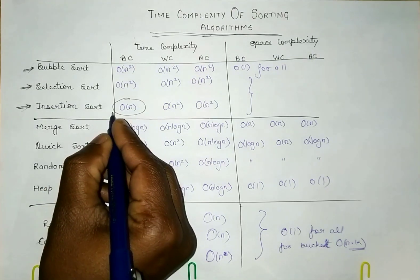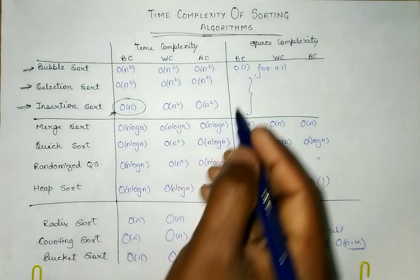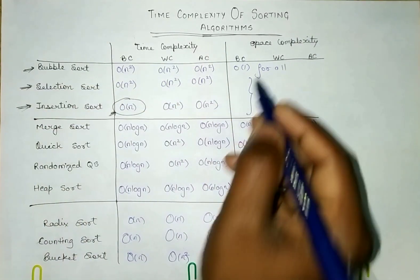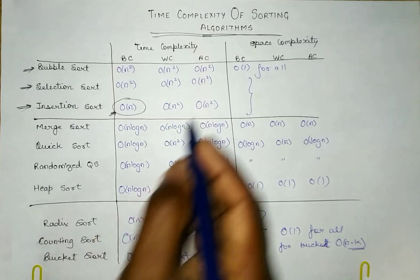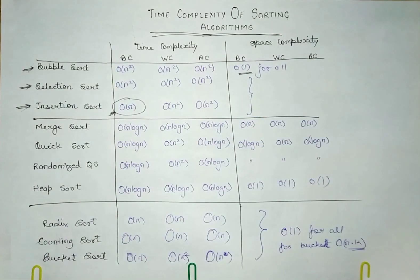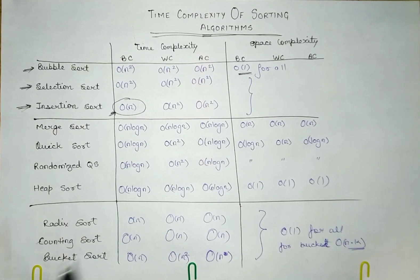The space complexity for all of these is order of one because we do not require any extra space for computing the sorting. Therefore we do not have any space complexity, meaning we are not wasting any space. Because of that, the space complexity for all cases is order of one.